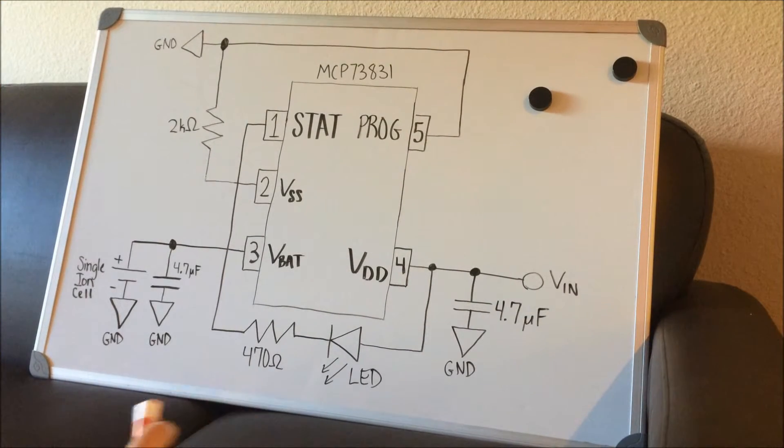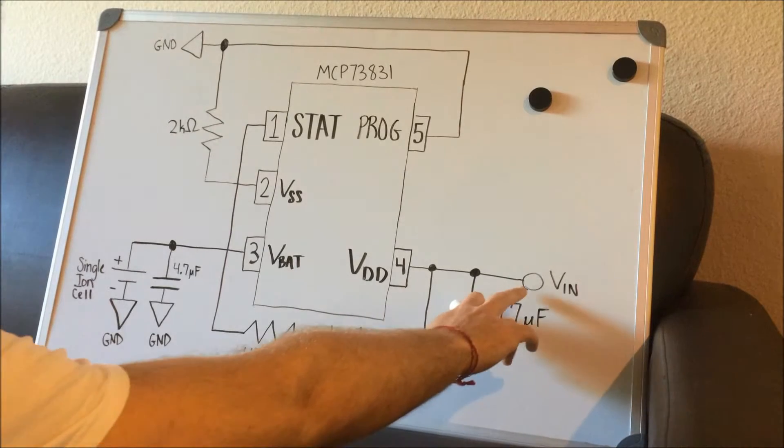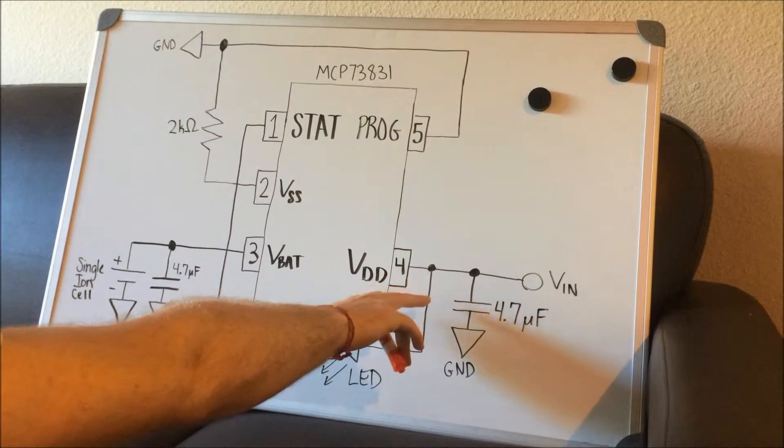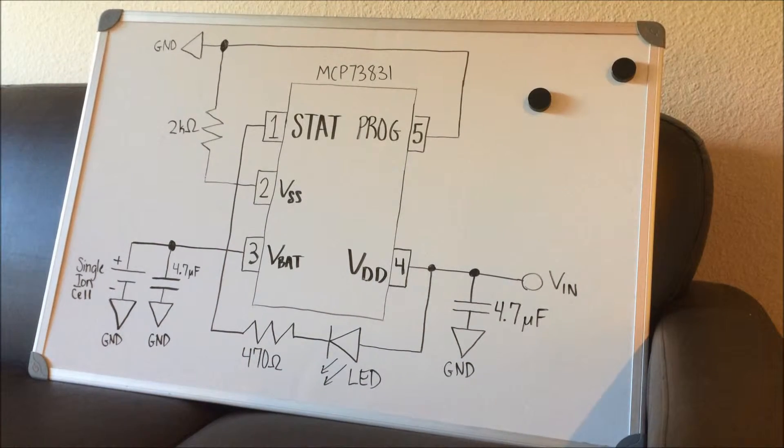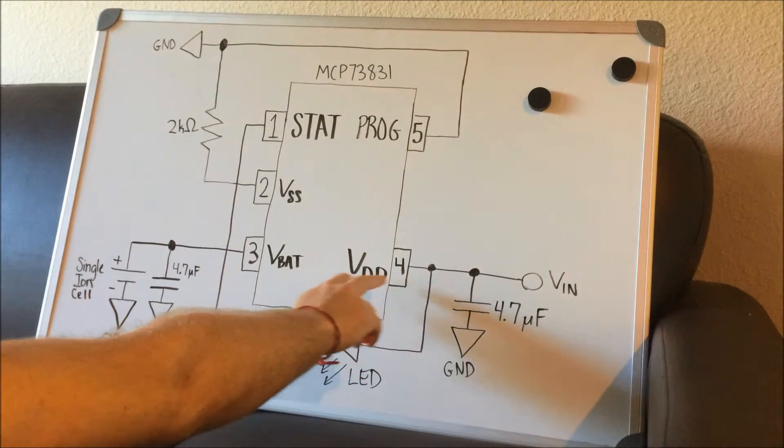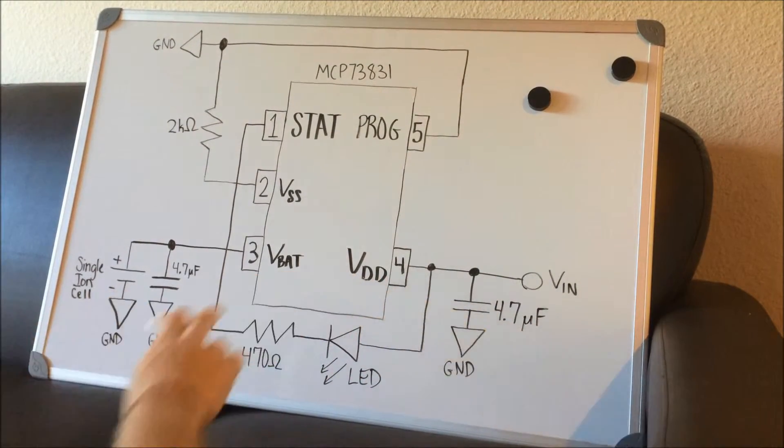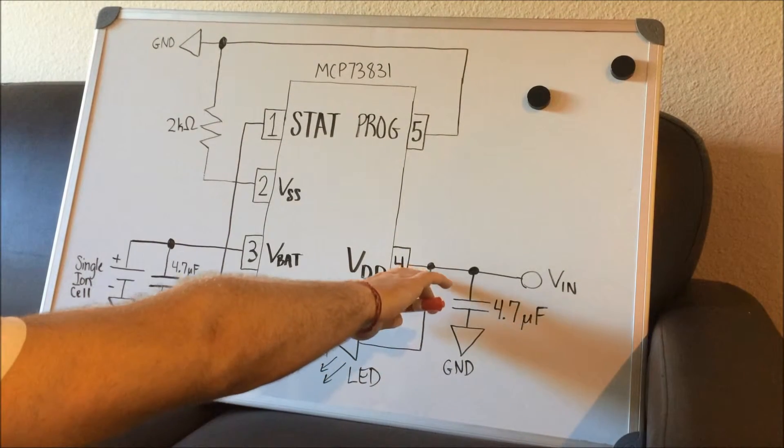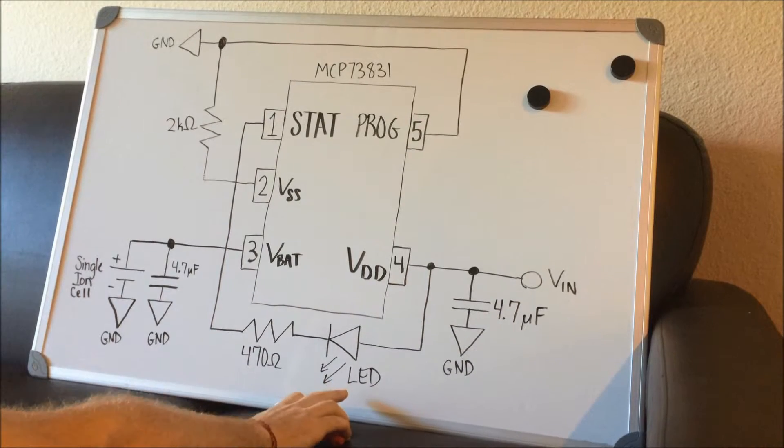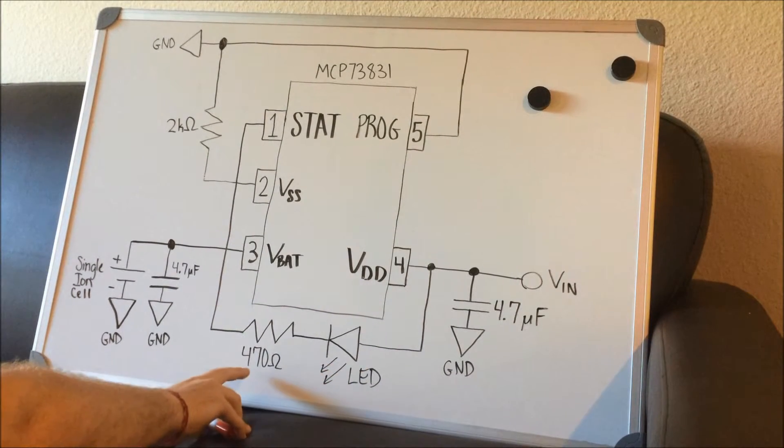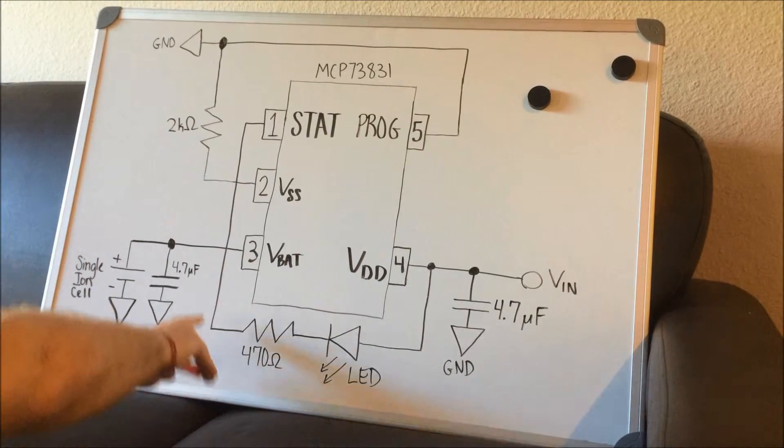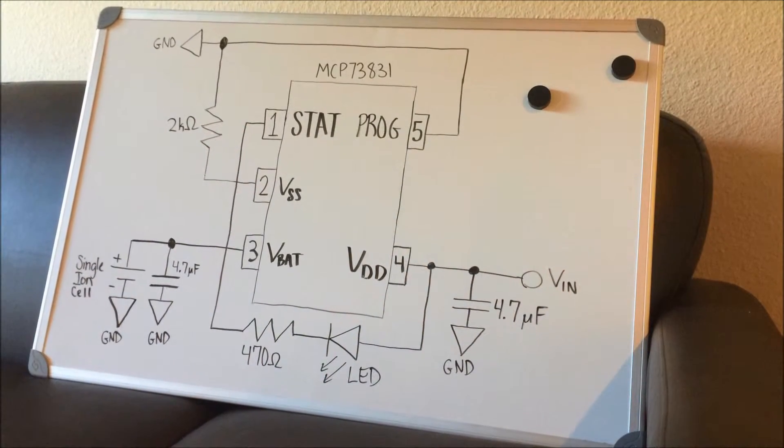This is our schematic. Let's start right here at VIN. This is where we connect the solar panel, which also connects to this 4.7 microfarad capacitor. The next part goes to VDD. This is the input supply voltage pin. The next branch right here is the LED indicator, which also goes through the 470 ohm resistor up to the charge status pin, referred to as STAT.